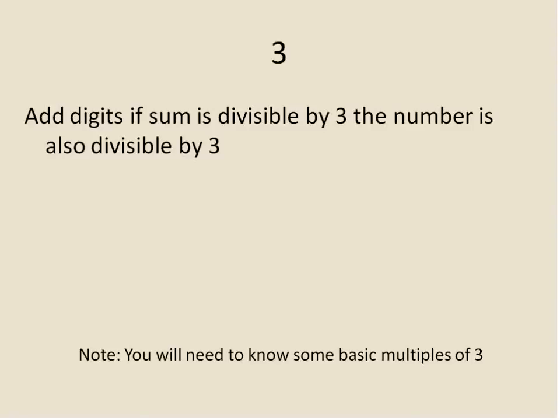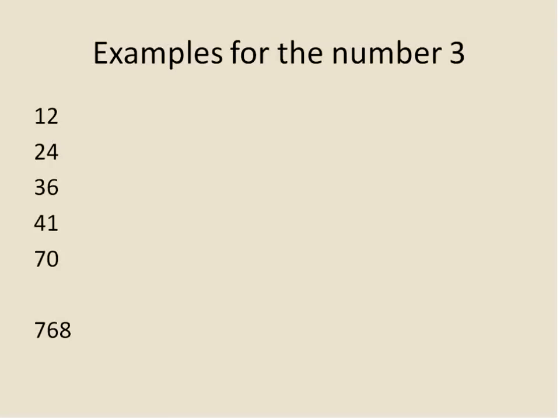It gets a little bit more complicated as we get bigger numbers. 3 is our next one. For 3, all you need to do is quickly add the digits, and if the sum is divisible by 3, the number is also divisible by 3. You'll need to know some basic multiples of 3, but this is a quick way to check for larger numbers. With the number 12, the digits are 1 and 2. 1 plus 2 is 3, and 3 is divisible by 3, therefore 12 is divisible by 3.